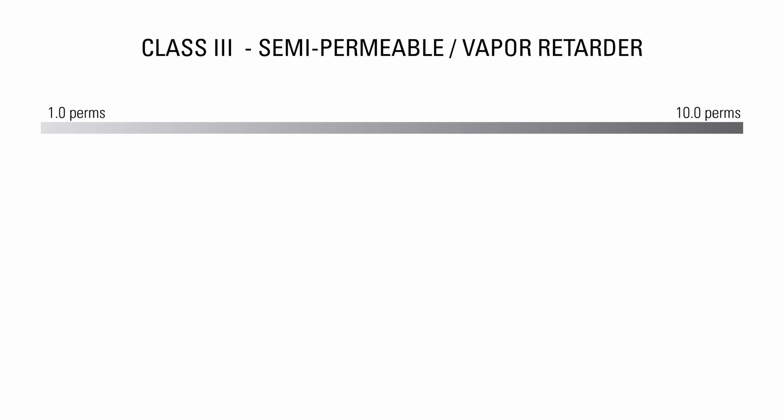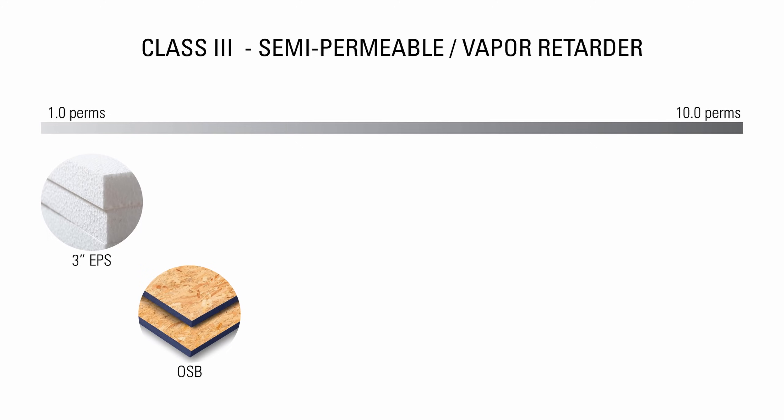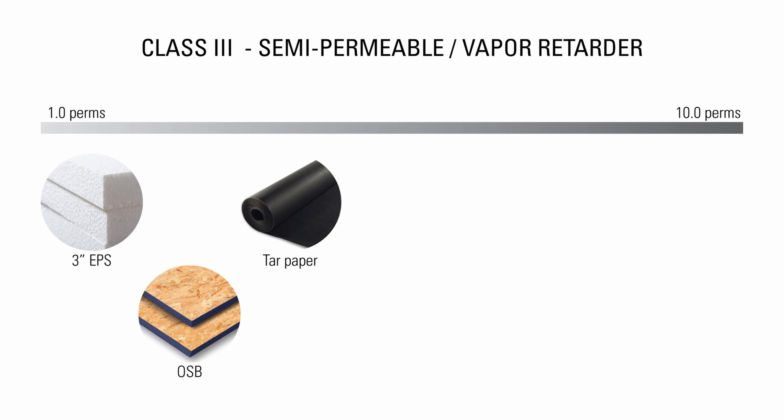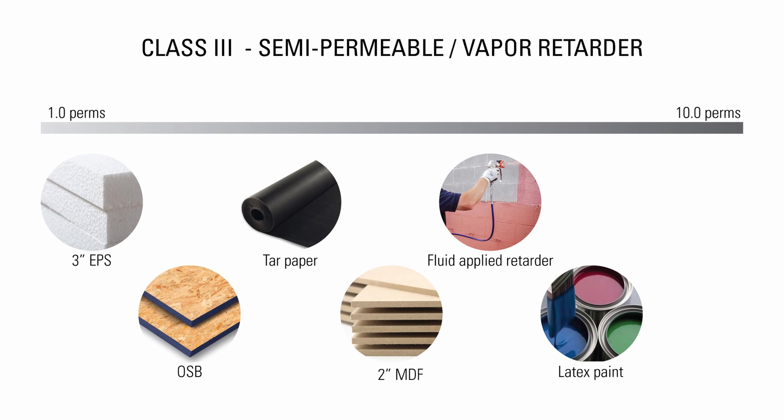The third classification includes materials with 1 to 10 perms. They are considered semi-permeable to water vapor. This includes 2–3 inches of EPS insulation, OSB, tar paper, 2 inches of MDF, fluid applied vapor retarders, latex paint and plywood sheathing.